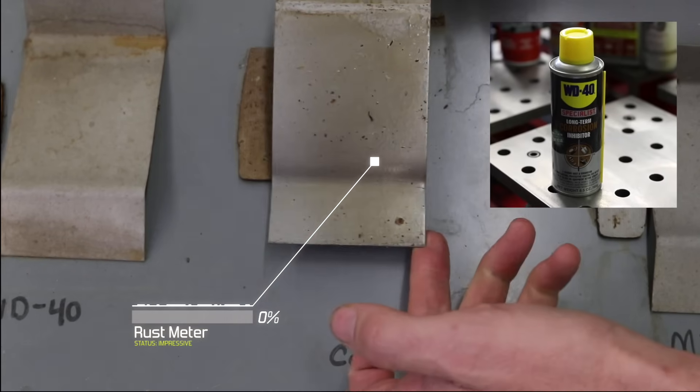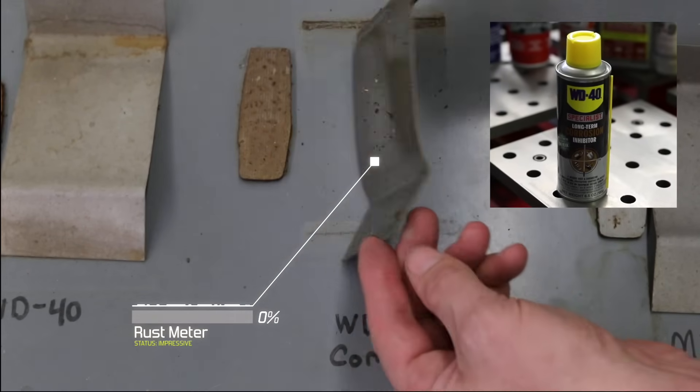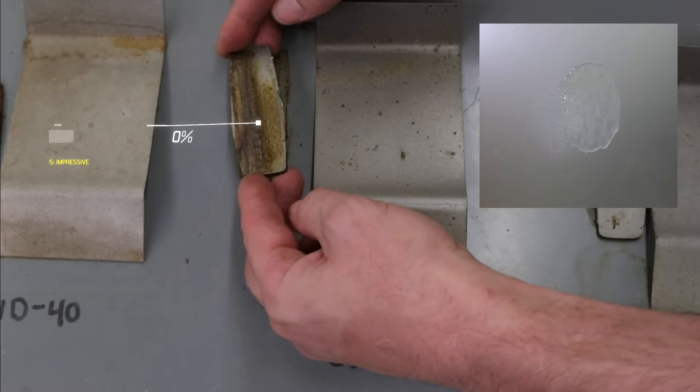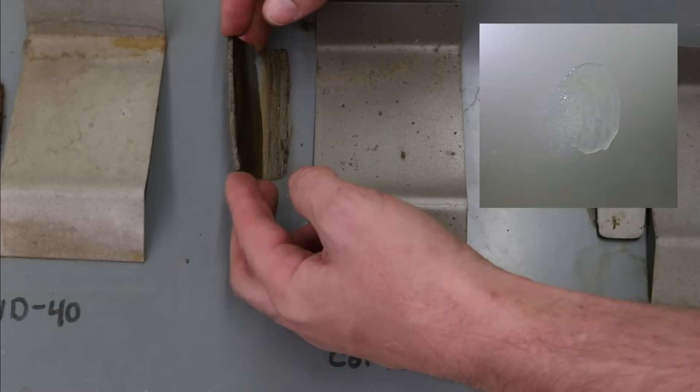We got WD-40 Corrosion Specialist. This one did overall very well. But it left a residue behind on the cast iron, which I don't like. But it also applies very well. It sticks to the metal.